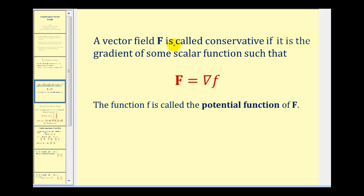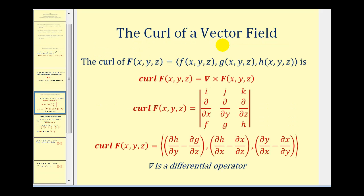Before we determine the test to see if a given vector field is conservative, we first need to talk about the curl of a vector field. I did make another video that addresses just the curl of a vector field. The curl of the vector field F is equal to the differential operator crossed with the vector field F. To evaluate this cross product, we evaluate this three by three determinant, where the first row is i, j, k, the second row is the partial derivative operators, and the third row comes from the components of the vector field big F. Evaluating this determinant gives us another vector field, where the x, y, and z components are each the difference of two partial derivatives.